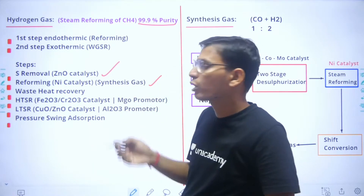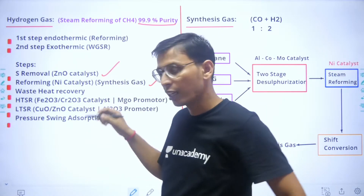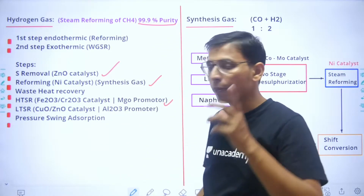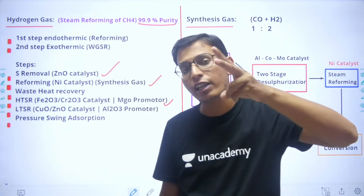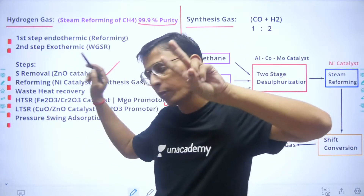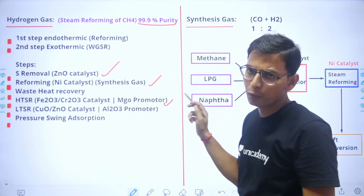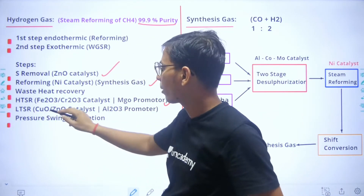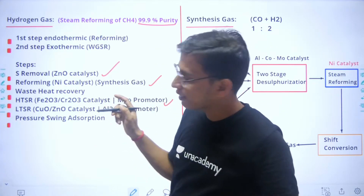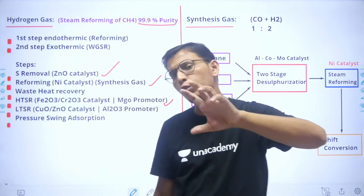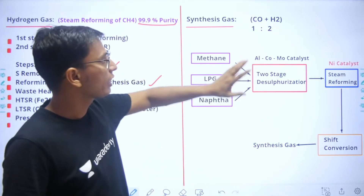The synthesis gas — a mixture of carbon monoxide and hydrogen — is then passed to a water-gas shift reactor. The water-gas shift reaction is carried out in two steps: a high-temperature shift reactor using ferrous oxide and chromium oxide catalyst with magnesium oxide as promoter, and a low-temperature shift reactor using copper oxide and zinc oxide catalyst with alumina as promoter. Finally, CO and CO₂ gases are removed to obtain pure hydrogen.